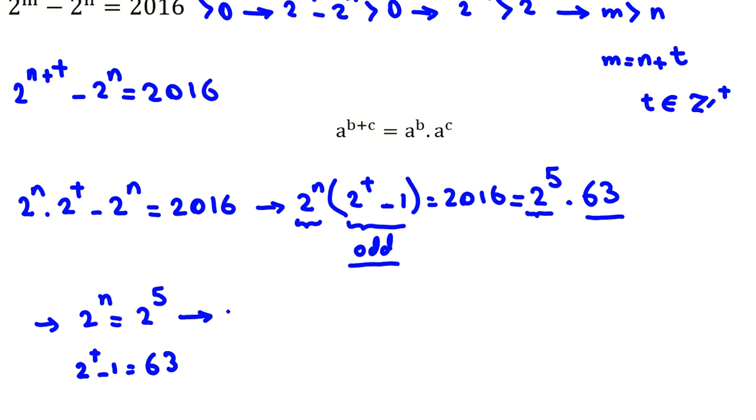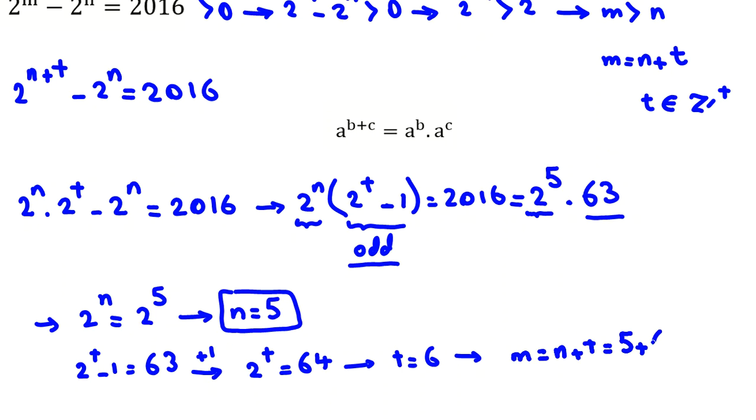From here, n equals 5. Now we should focus on finding t and then m. If we take the negative 1 to the right-hand side, it will be 2 to the t equals 64. So t equals 6. And because we said m equals n plus t, m equals 5 plus 6, which equals 11.